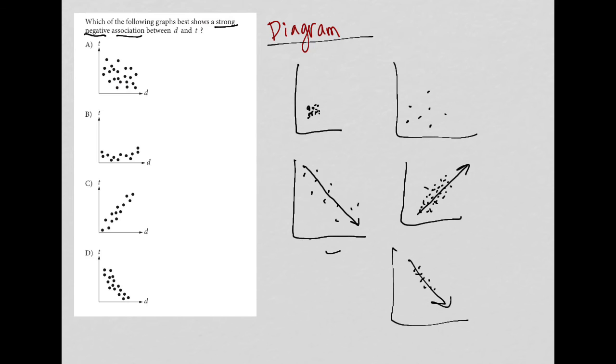Because for choice A, while it is negative, these points are pretty spread out. So this is not a strong association.